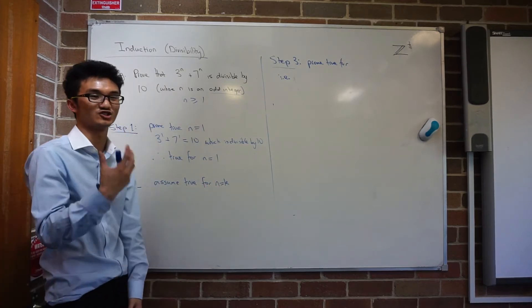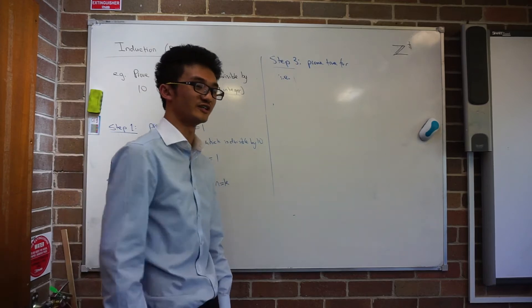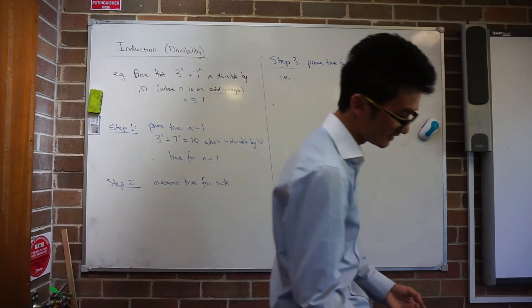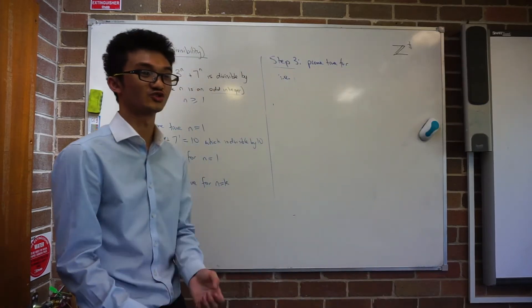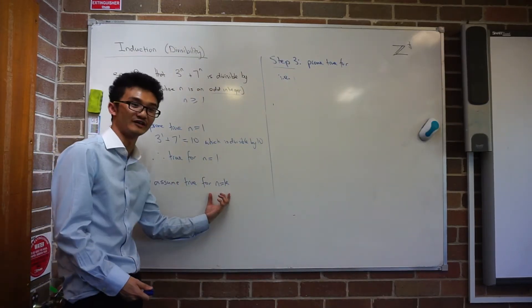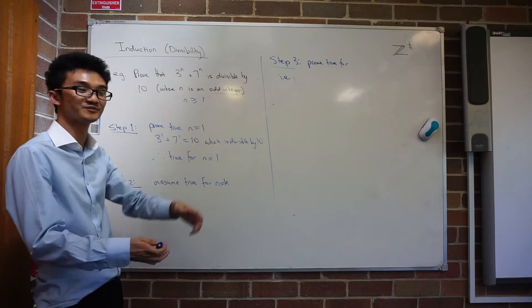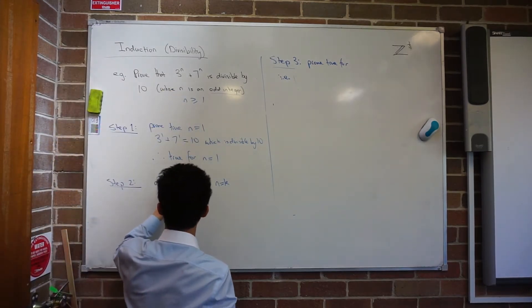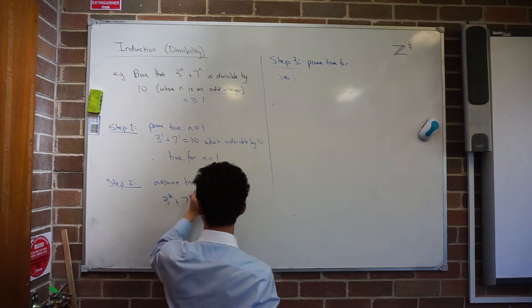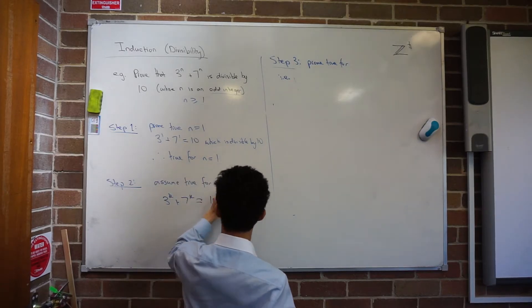On your paper you said, let n equal to k be a value for which the result is true. So you're assuming this is a value which works, so it has to be an odd integer. And I'll just rewrite that. That's just going to be 3 to the k plus 7 to the k would equal 10m, where m is an integer.